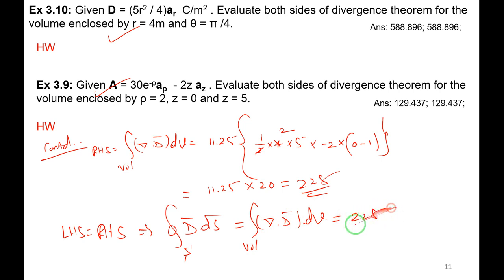So we have proved that LHS equals RHS: closed surface integral of D·dS equals volume integral of del·D·dV, both equal to 225. The remaining two problems are homework for you. I will stop recording now.